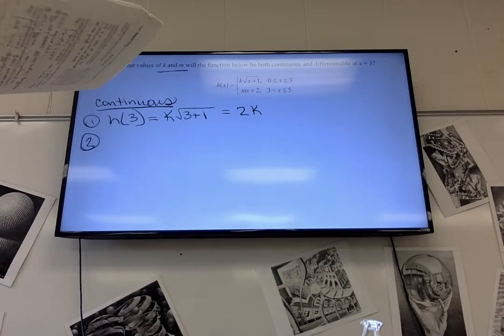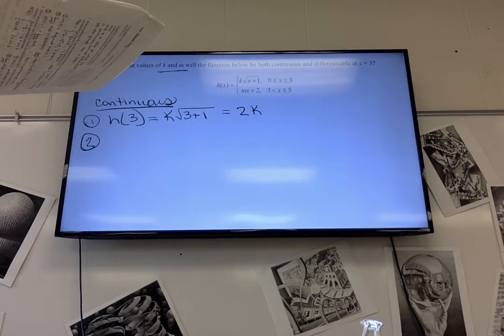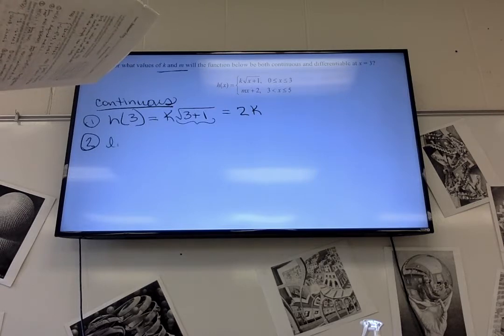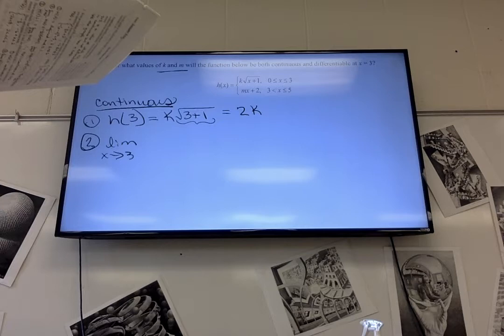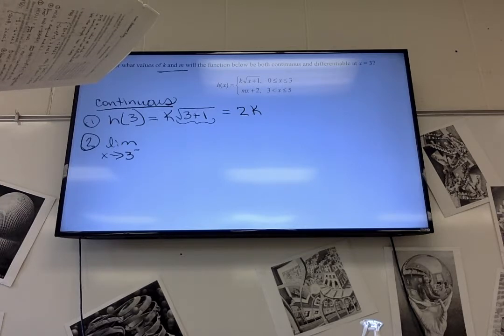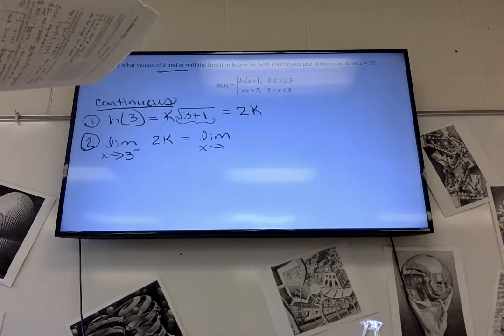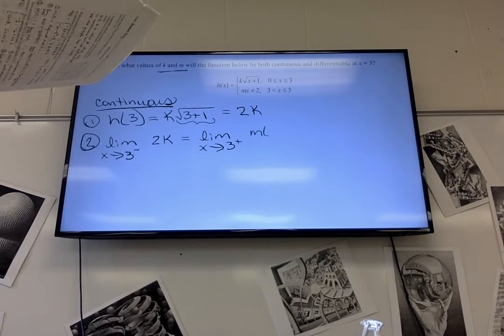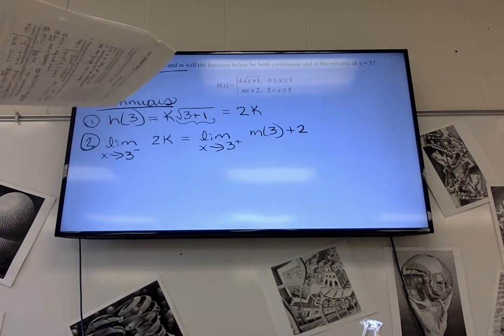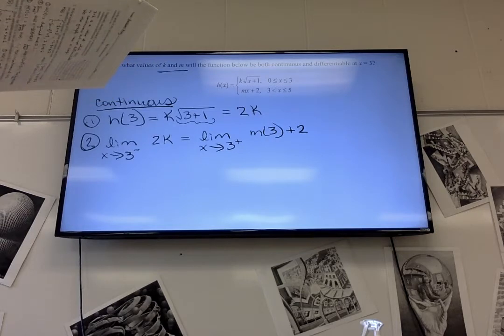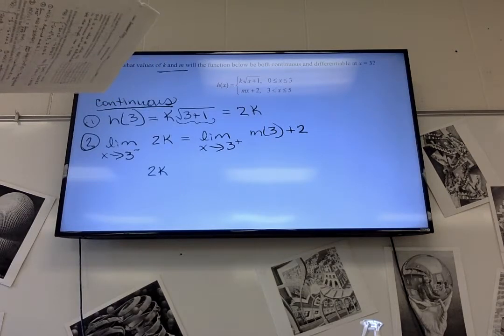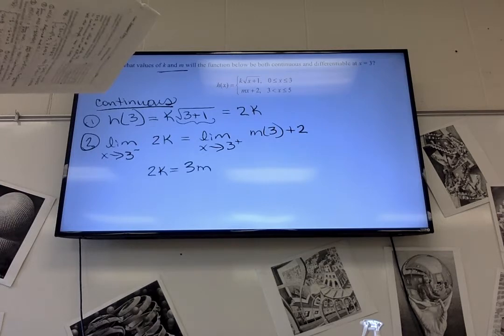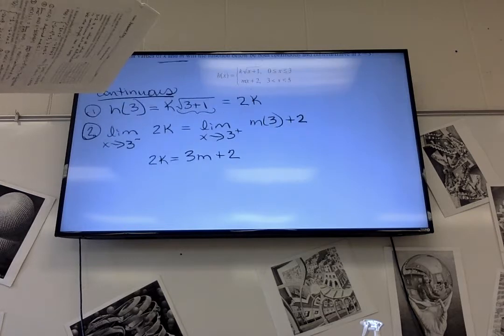Why are we saying 2k? The square root of four is 2. Oh, okay. Then the limit as x approaches 3 from the left is the top one again, so that's 2k. 2k has to equal the limit as x approaches 3 from the right, which is m times 3 plus 2, because x is 3. So in order for it to be continuous, 2k has to equal 3m plus 2.